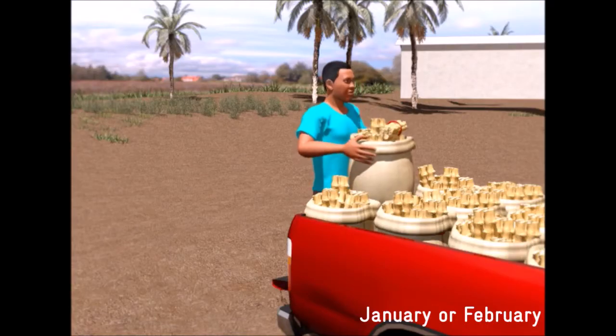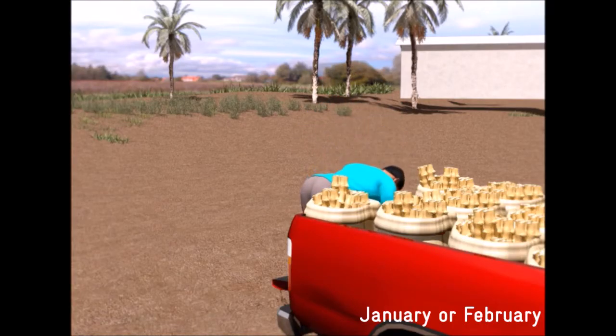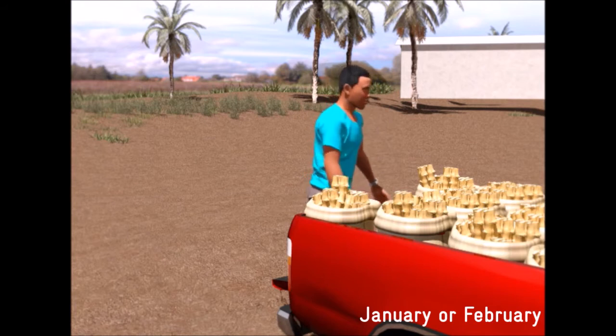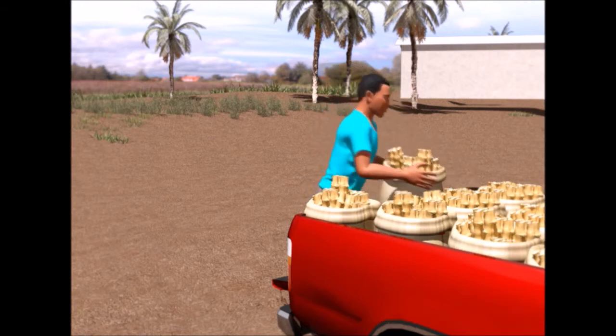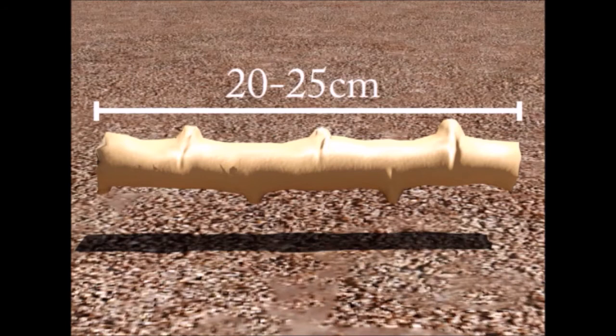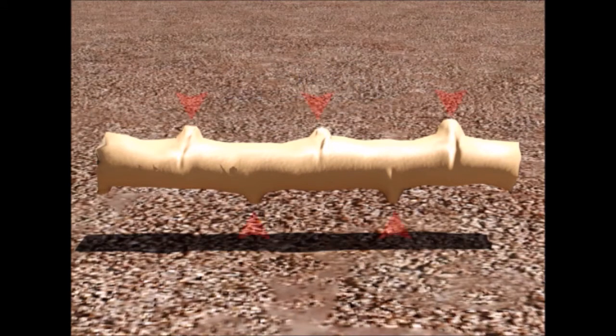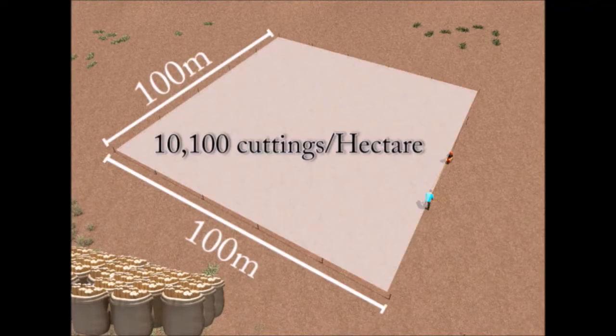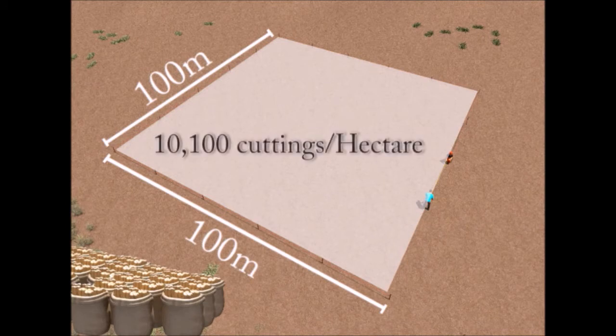We order our cassava cuttings or prepare them well in advance. This way, we have them well before it's time to plant. They should be 20 to 25 centimeters long and have four to five eyes. We need 10,000 cassava cuttings for one hectare but we recommend to buy 10,100 to replace the non-germinated ones.